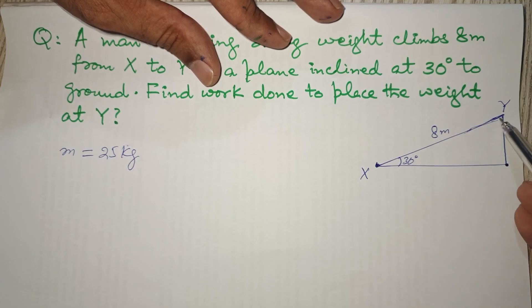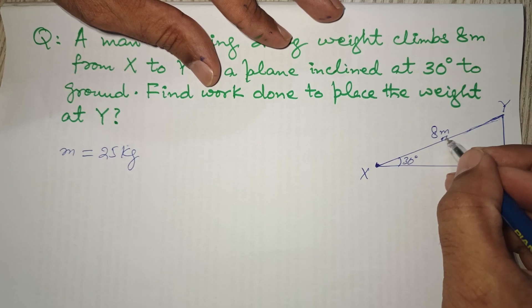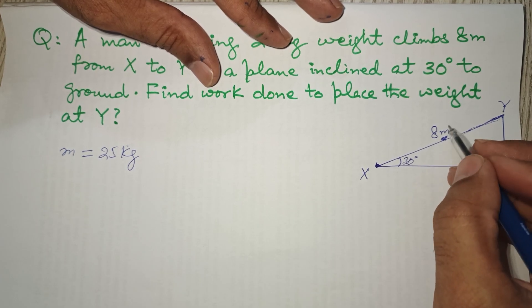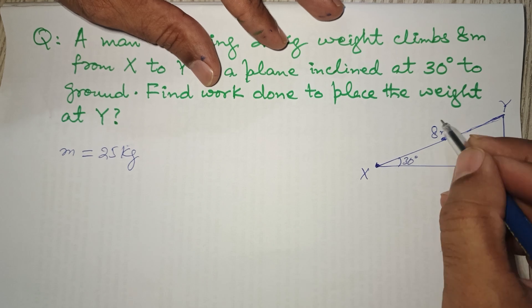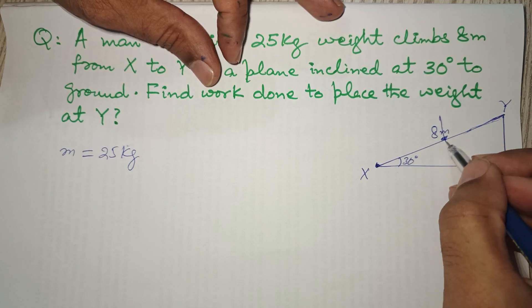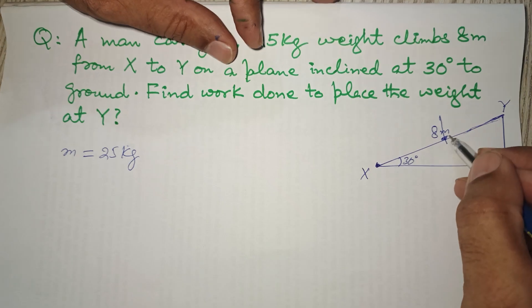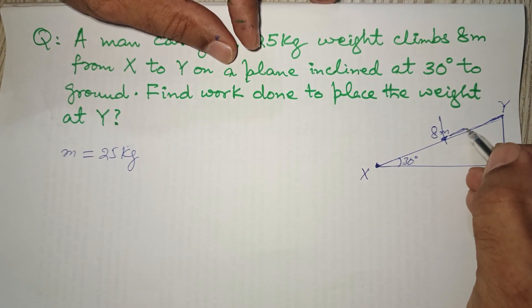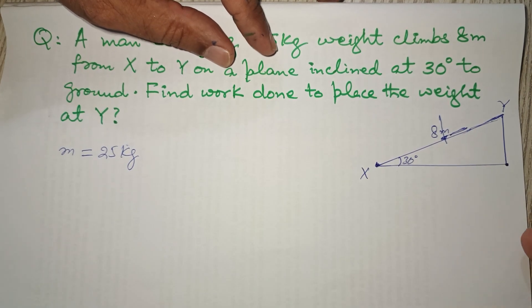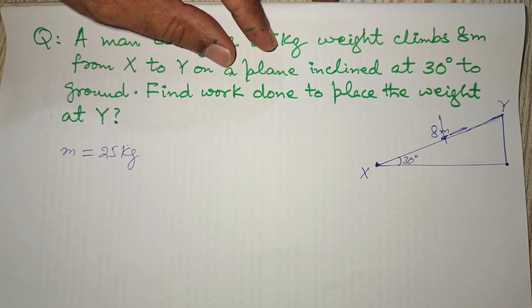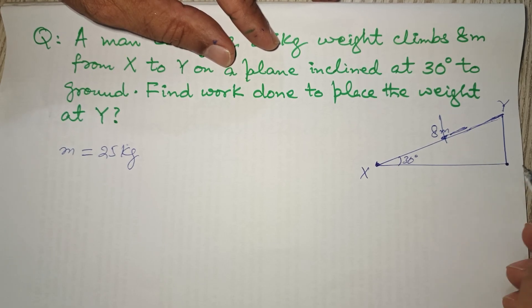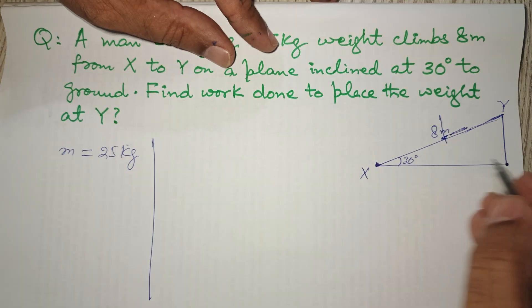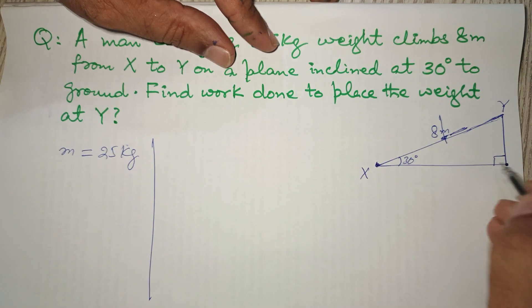The person has to move the weight from X to Y on this path. When he moves over this path, the weight will have two components: one component will be perpendicular to the surface and the other one will be parallel to the surface.